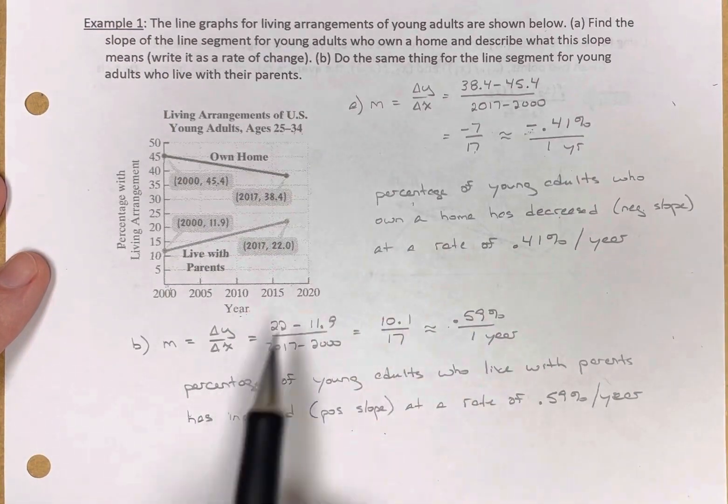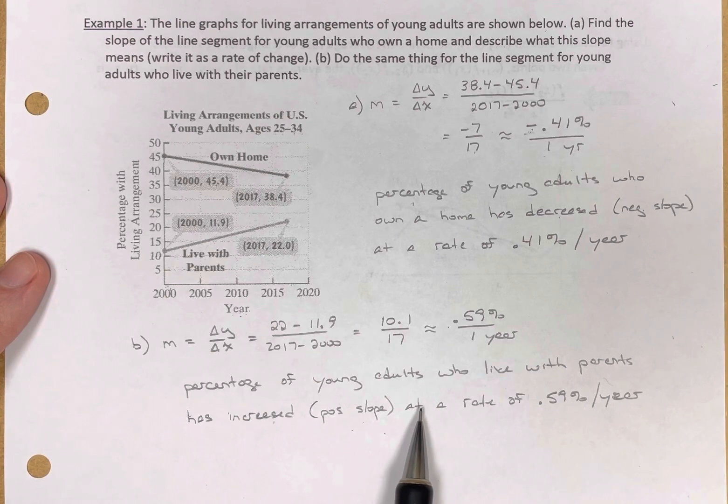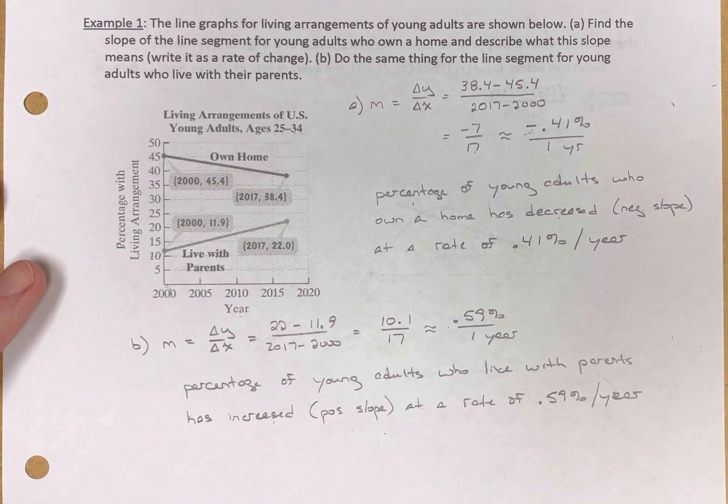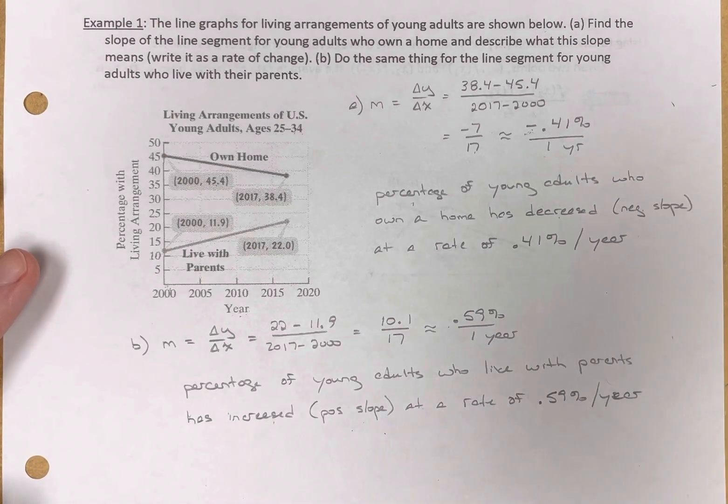Obviously, you've got the labels, percentage and years. You've got the same words, at a rate of, and then the numbers change there. So there is interpreting slope in real-life situations as a rate of change.